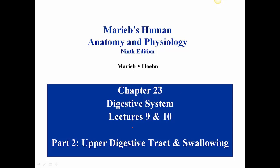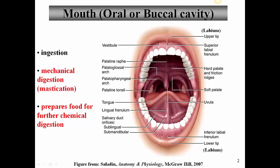Welcome to part two of lectures nine and ten. We're going to cover the upper digestive tract and swallowing today. Let's first start with the mouth, which is also called the oral or buccal cavity — pronounced like a belt, buccal.